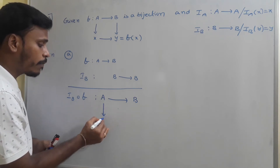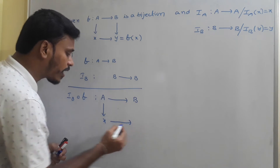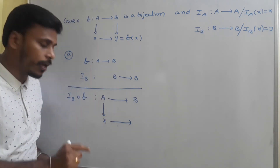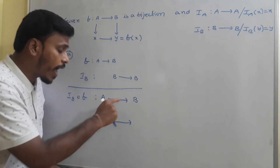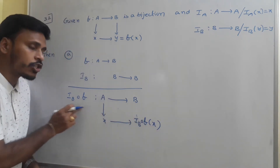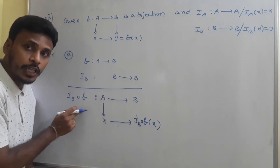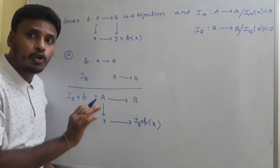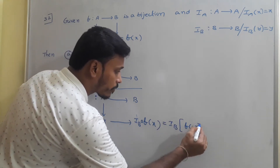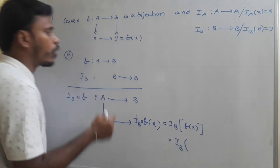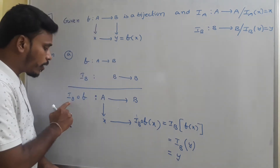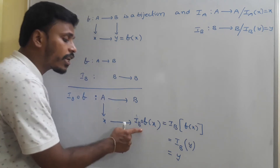And how does it connect? It connects an element x, where x is an element of A. This iB ∘ f connects x to an element of B, and that element is simply iB ∘ f of x — that is the definition of the function. As per the notation, this function connects x to iB ∘ f(x). I need to check whether it is y or not. So, iB ∘ f(x) is simply iB(f(x)), and that equals iB(f(x)). As per the definition, f(x) = y.